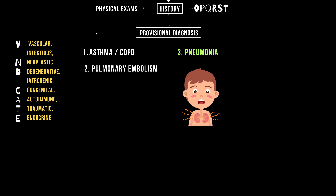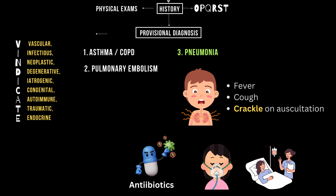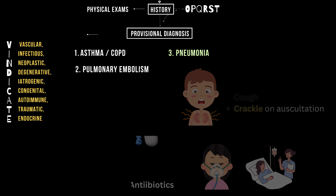For pneumonia, check for fever, cough, and crackles on auscultation. Broad-spectrum antibiotics are the go-to after obtaining blood cultures. Provide oxygen and supportive care, and monitor for sepsis or respiratory failure.